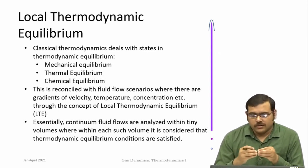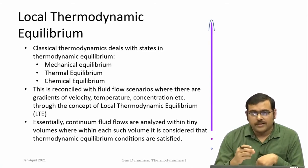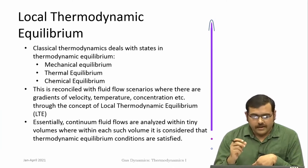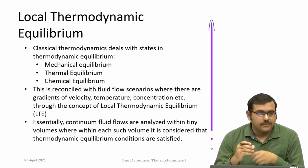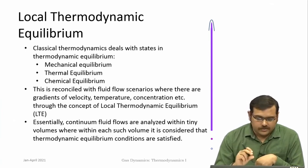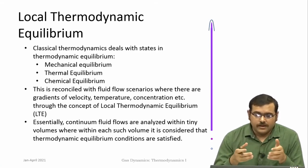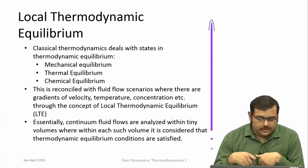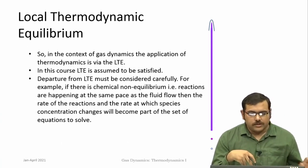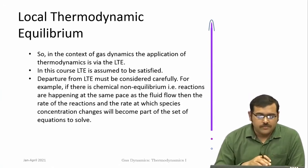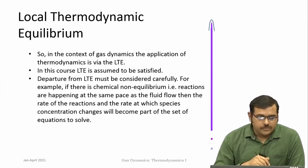Fluid flows are always analyzed by considering small, tiny volumes, and we say that in each of those particular tiny volumes thermodynamic equilibrium is valid. That is local thermodynamic equilibrium — conditions are valid in that tiny particular volume, and it is interacting with other volumes, each of which is in a different thermodynamic equilibrium. We will deal only with cases where local thermodynamic equilibrium is valid and assumed to be satisfied.